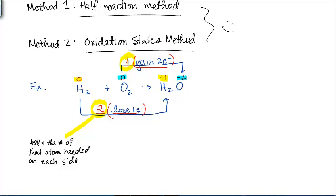This number, what this does is it tells the number of that atom needed on each side. As does this one. So, as we look at this, I am going to add coefficients to make sure that that happens. I need two hydrogens on each side. Well, I have two there, so I'm good. So I can just put a one there. And I have two over here already, so I'm good. I can just put a one there.